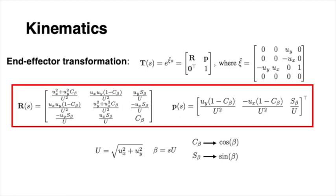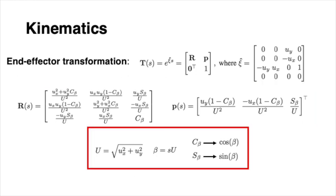By computing the matrix exponential, we have the following orientation matrix and position vectors. To make the equations more compact, we use shorthand notation.